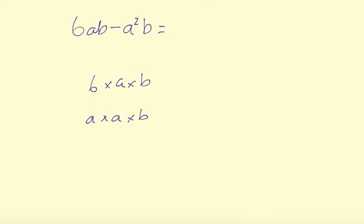So can you see any common factors in there? Well, we've got an a here and an a here. And we've got a b here and a b here. So the highest common factor is actually a combination of a and b. So the highest common factor is actually ab.